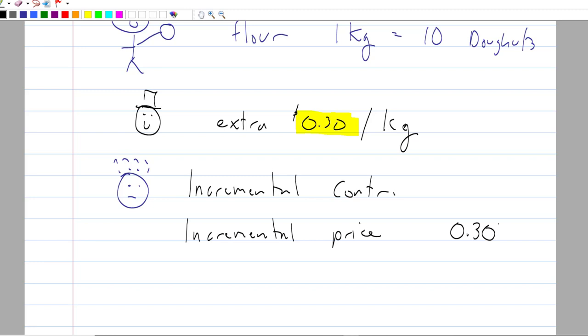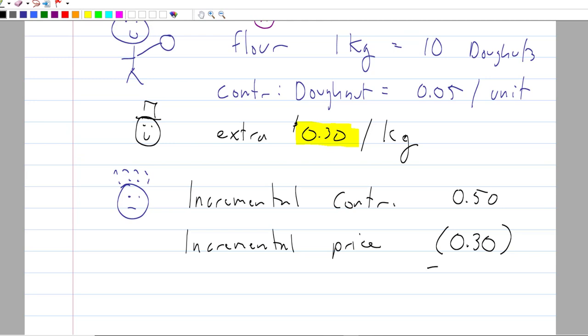So, we need to understand the incremental contribution from selling 10 more doughnuts. And we will compare that to the incremental price. And I already told you, to buy the extra kilo of flour, we're going to spend 30 cents. Let me now give you more information. The contribution that we earn from a doughnut is 5 cents per unit. If I buy another kilo of flour, it's going to cost me 30 cents. We'll make that negative. With that flour, I will produce another 10 doughnuts, and I will earn an additional 50 cents. Look at the difference. The difference is a positive 20 cents increase in contribution. So, I will accept the vendor's offer of paying 30 cents more than my normal price.